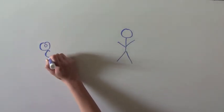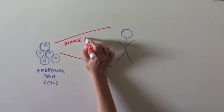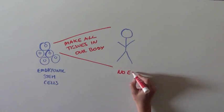As humans, we develop from a group of cells called embryonic stem cells. These cells can make up all of the tissues in our bodies. But once we are born, these embryonic stem cells are long gone.